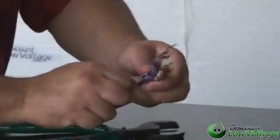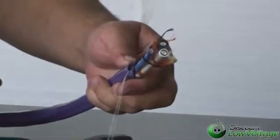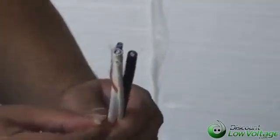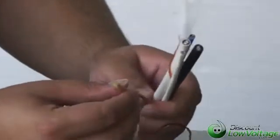You have your pull rope, so it'll help you strip off the jacket. And you have your fiber here. It looks like a tight buffer, two strand fiber, multi-mode, 62.5.